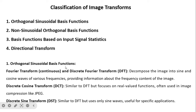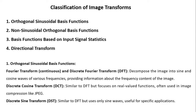Orthogonal sinusoidal transforms include the Fourier Transform for the continuous domain and the Discrete Fourier Transform for the discrete domain, which is suitable for images. These decompose the image into sine and cosine waves of various frequencies, providing information about the frequency content — for example, how much low-frequency or high-frequency content is present in an image.